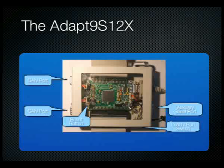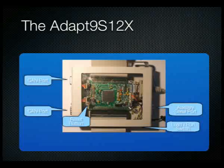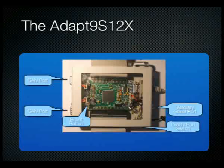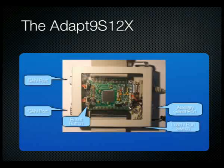There is a DB9 female connector near the primary serial port for connecting to the computer to send information back and forth. There is also a load/run switch on the side of the box. To load the microcontroller: click the switch to load, reset the box, and load your code. Once successfully loaded, flick the switch back to run, reset the box, and your code will be running. It is as simple as that.